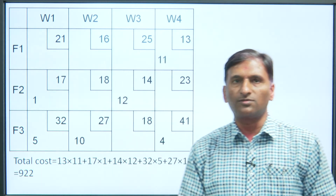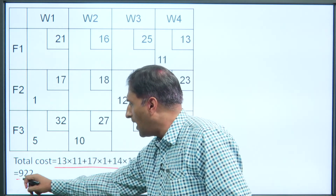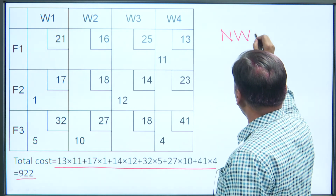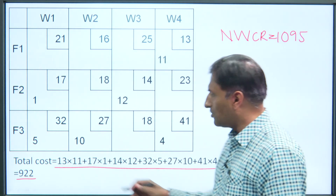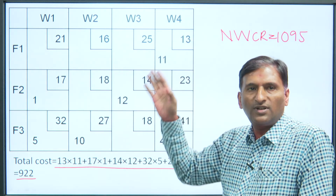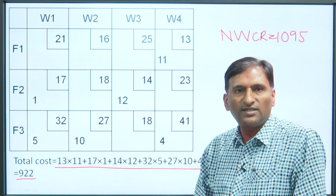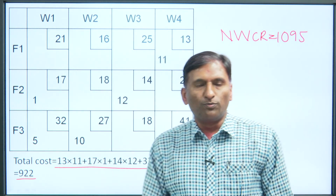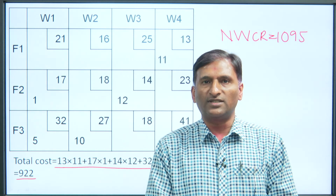In this way we get the initial solution from the Least Cost Method. Calculating the total cost from this allocation gives 922. Recall that using the North West Corner Rule the initial cost was 1095. Now with Least Cost Method it is 922 — lower. This means when we begin optimizing from 922 instead of 1095, we save optimization steps and the problem takes less time to solve. This is the advantage of the Least Cost Method.